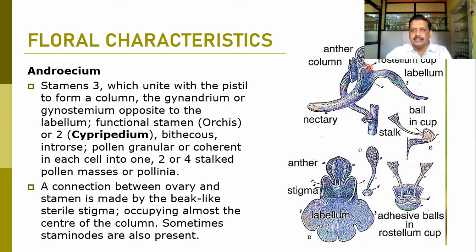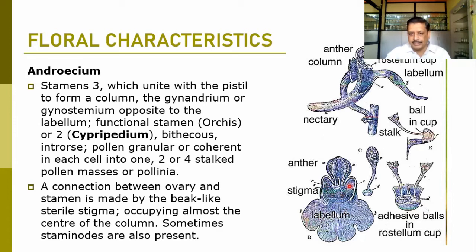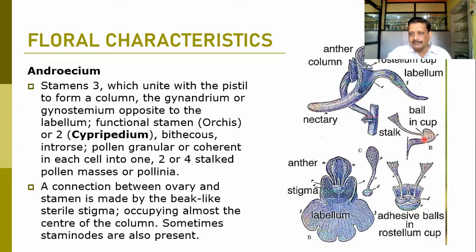This portion is nothing but the anther column. This is the typical ovary and this is the nectary tissue or spur developed from that. These two are the anther cells and this is the stigmatic surface. Here are the pollinia structures — instead of anther cells we find the pollinia. This is the typical lip or labellum. This is the stigmatic surface, and here are the anthers in the form of pollinia — the pollinia sacs — attached on the rostellum cup.